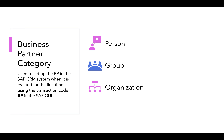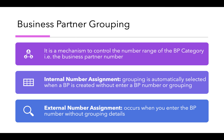Business partner grouping is a mechanism to control the number range of the BP category, that is the business partner number. Whenever a business partner is created in the SAP system, a number is allotted to it. With the help of business partner grouping customizing, we can select the sort of number range that the business partner ID will have.